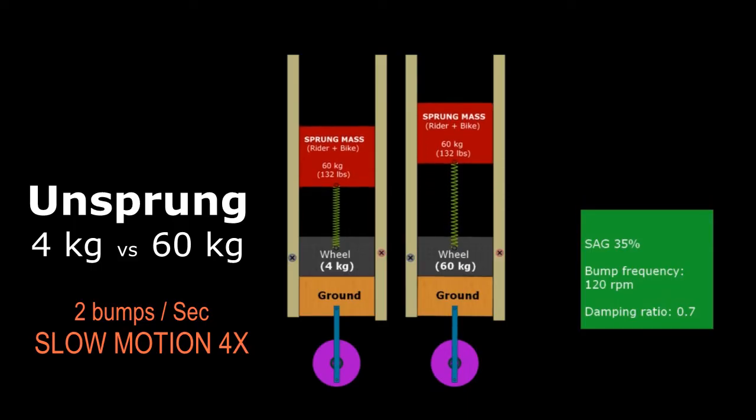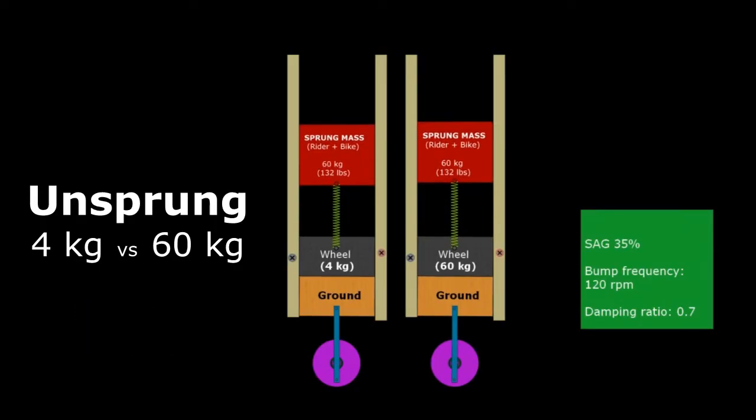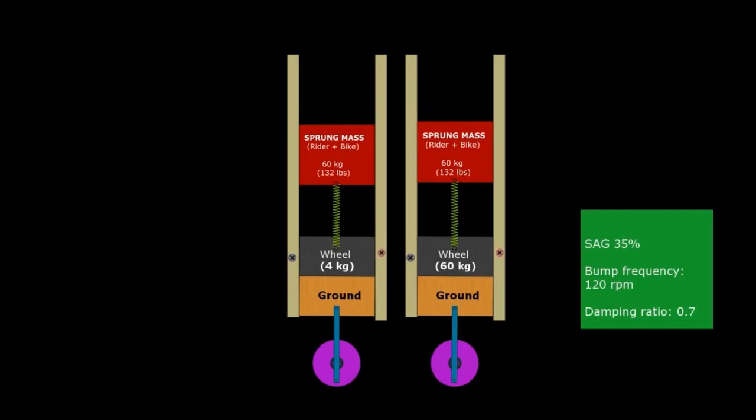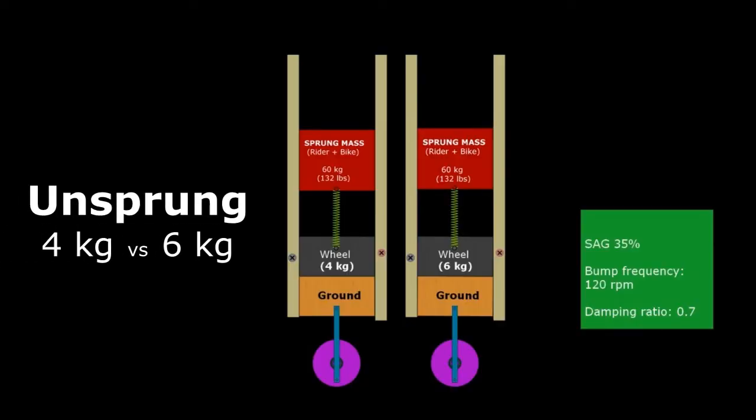This happens because since the wheel is so heavy and due to the inertia, the wheel does not shift direction very easily. So when it starts to move up, it continues to move up and it's very hard to slow down and to reverse the movement and to start moving down.